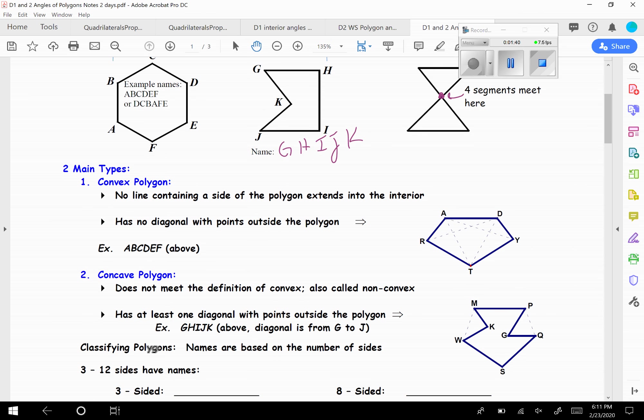Now we have two different kinds of polygons. We have convex polygons. So I like to say these are like spiky polygons. No line containing a side of the polygon extends into the interior. So basically, none of the sides are poking back in. And it doesn't have any diagonal with points outside the polygon. So here, a diagonal is going from corner to corner, as long as those two corners are not right next to each other. So all these diagonals, they're all inside the polygon. And so A, B, C, D, E, F up here is a convex polygon.